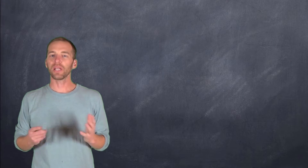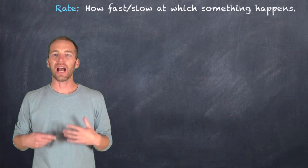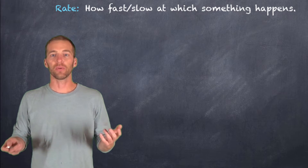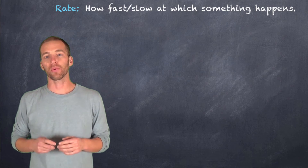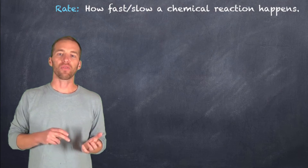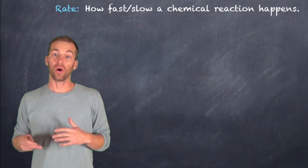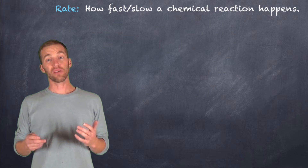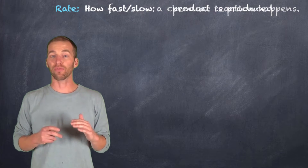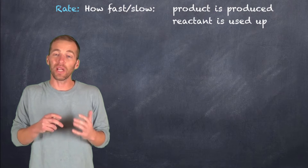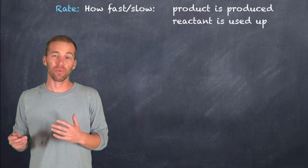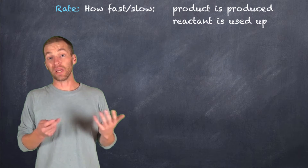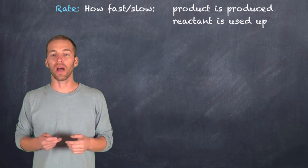When we talk about rate, we're just referring to how fast or slow something happens. And when we deal with something in a chemical reaction, we're dealing with how fast or slow a chemical reaction is occurring. More specifically, we're dealing with how fast a product is being produced, or how quickly a reactant is being used up.